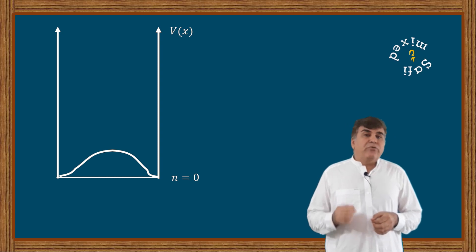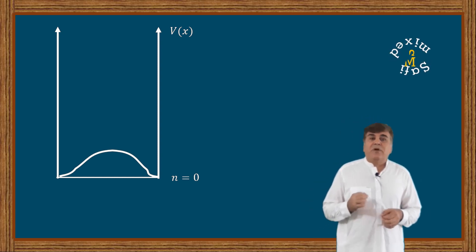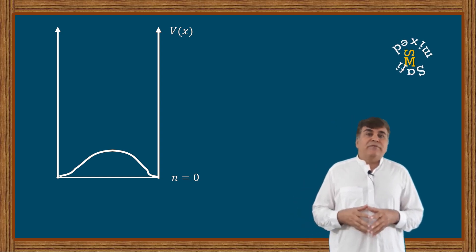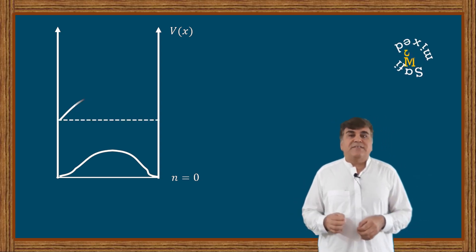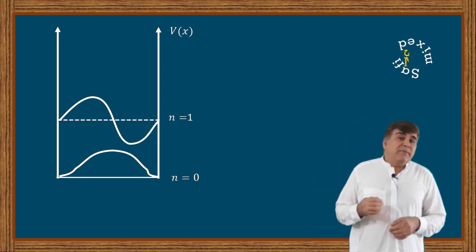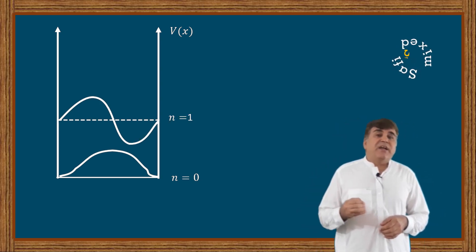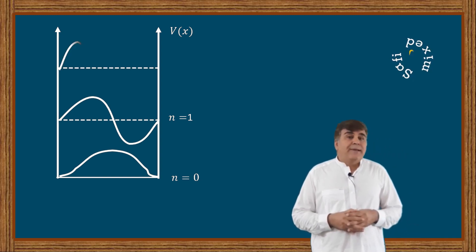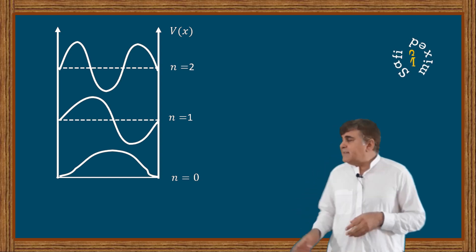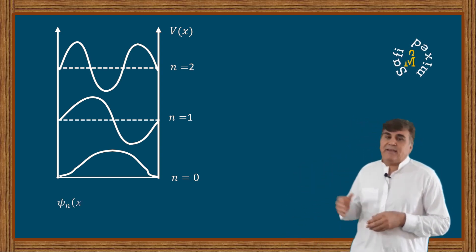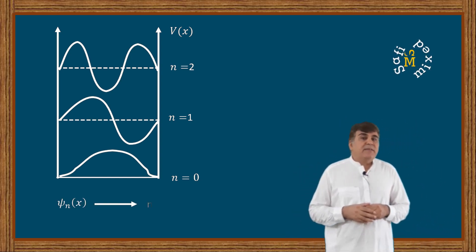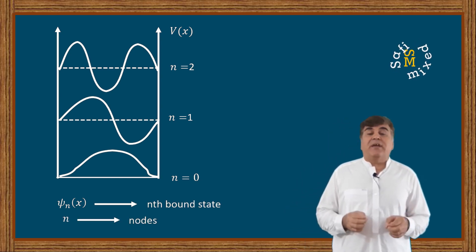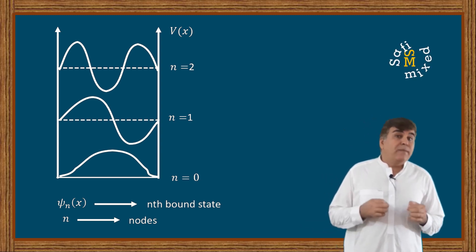In addition to the boundaries, the first excited state becomes zero at one more point in the region — in other words, the first excited state has one node. Similarly, the second excited state has two nodes, and so on. In general, the nth wave function ψₙ(x) of the nth bound state vanishes n times in the bounded region and therefore has n nodes.